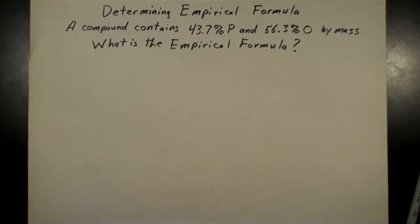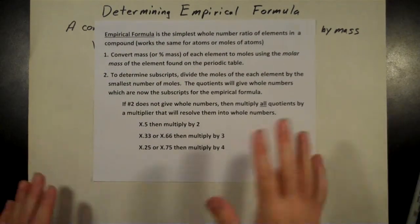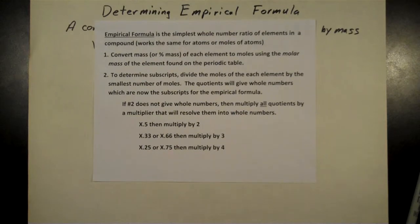All right, here's another example for determining empirical formula. Just to review, here's our rules that we're going to be using. The empirical formula we're looking for is that simplest whole number ratio. We convert the mass of each element into moles and then divide by the smallest number of moles.